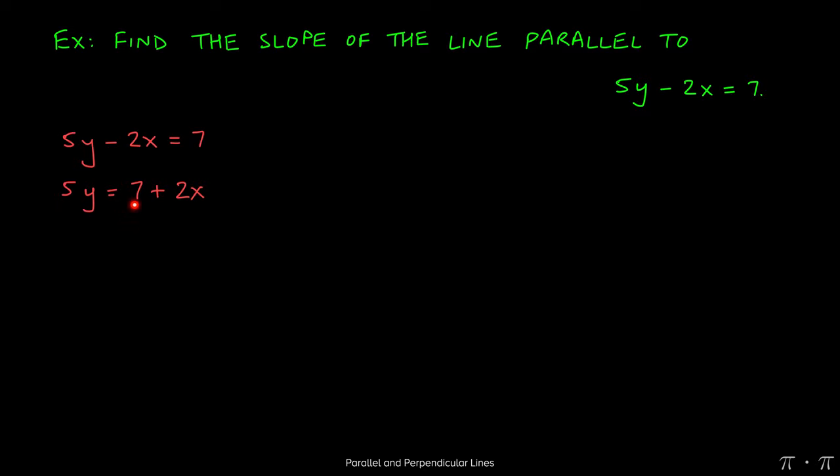So we can divide each term of this equation by 5. That'll cancel out the 5 on the left-hand side. And then on the right-hand side, you'll be left with 7 over 5 plus 2 over 5x.